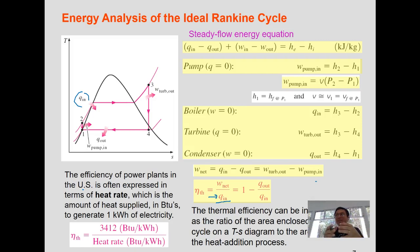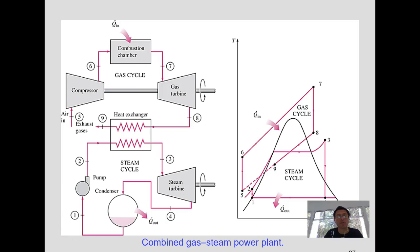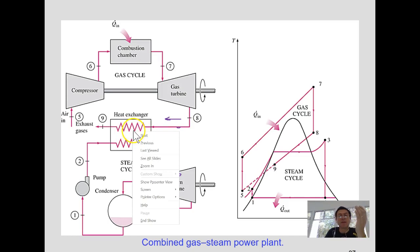In the other hand, we have a vapor turbine that needs heat to change phase. So if I combine them, I will have a combined cycle. In this combined cycle, I am using the gases and I have the outlet to transfer heat to the steam cycle.